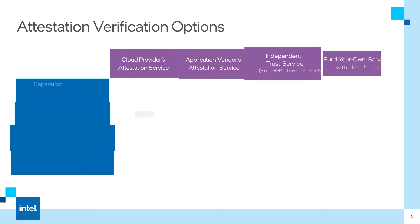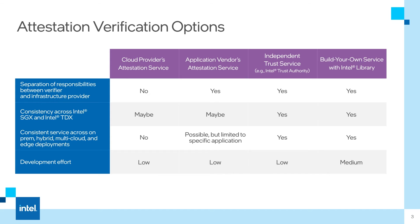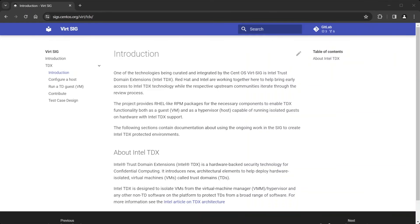There isn't just one attestation service available. If you trust your cloud vendor, you could use their attestation service, though it may or may not be consistent between Intel SGX and Intel TDX. An application vendor's attestation service at least has separated responsibilities between the verifier and the infrastructure provider, but support in other areas could be limited. Intel Trust Authority is a new service launched in 2023 that can easily satisfy all of the requirements listed, including support for Intel SGX and TDX. It can work in a public cloud, hybrid cloud, or on edge deployments.